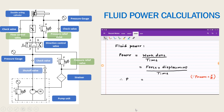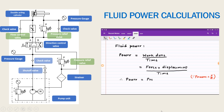We know that pressure is expressed in terms of force upon area. So pressure p is equal to force upon area, which means force is equal to pressure into area. In place of force we can substitute pressure into area, multiplied by the displacement, divided by time.